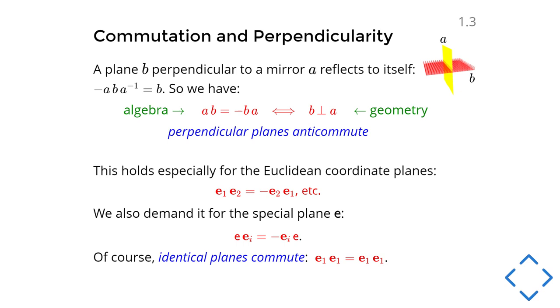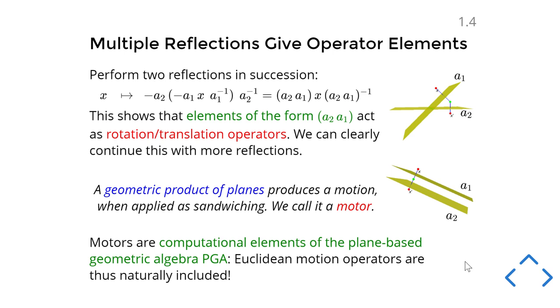So we find that these things that we'd like to talk about in geometry have a very simple and clean representation for the geometric product, which is of course why the product is called geometric. And in several of the derivations that I will do in the following, this especially holds for the coordinate planes. E1 is a plane that passes through the origin because there's no delta, and its normal vector is in the E1 direction. This is the coordinate plane with a normal vector in the E2 direction. And if I swap them in the product, then I get a minus sign because they are orthogonal. Let's also include that special plane E, make it orthogonal to all the other planes. And of course identical planes commute. E1 E1 will always be E1 E1. Well, with these rules we will be able to compute the product of planes.